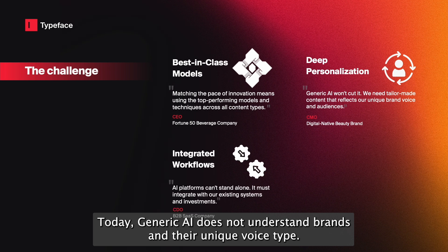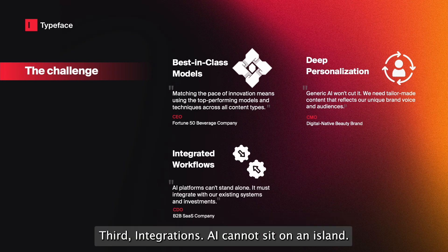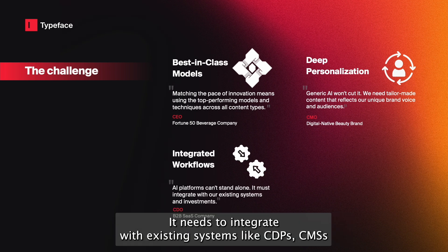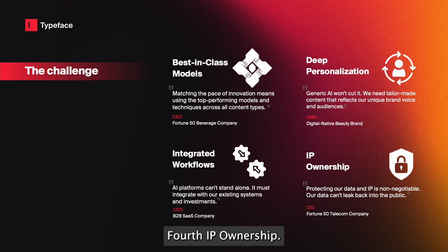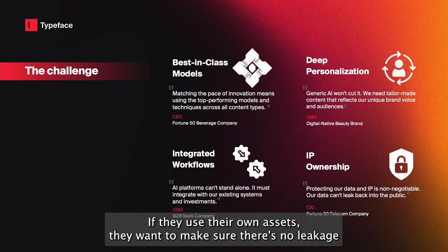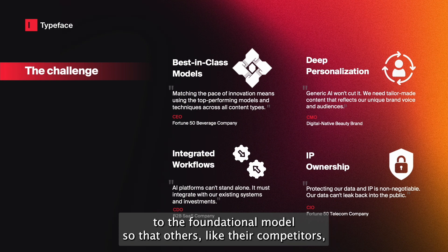Third, integrations. AI cannot sit on an island. It needs to integrate with existing systems like CDPs, CMSs, and productivity tools. Fourth, IP ownership. This one's non-negotiable. If they use their own assets, they want to make sure there's no leakage to train the foundational model so that others like their competitors could benefit.